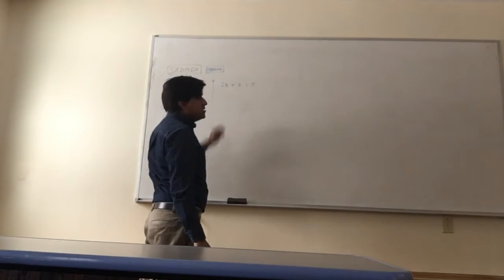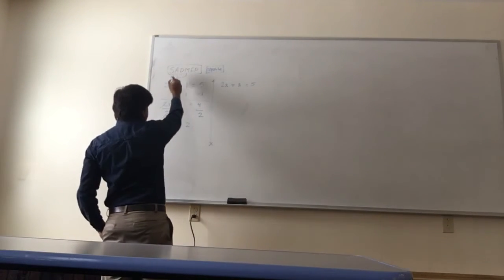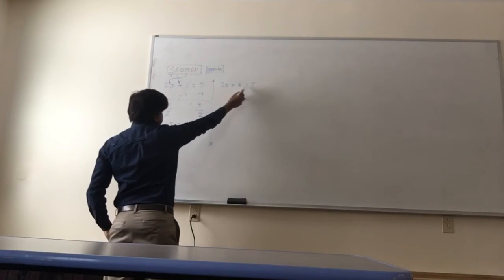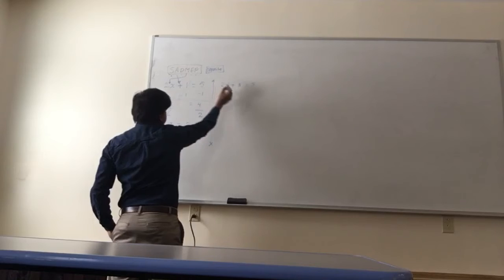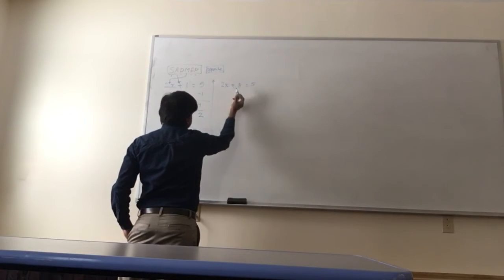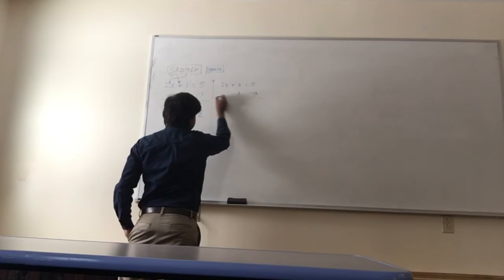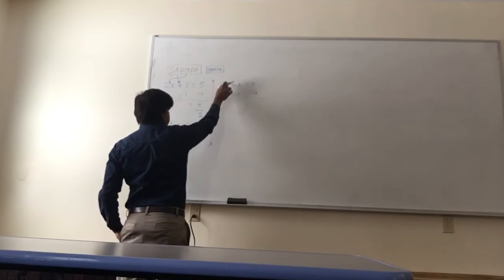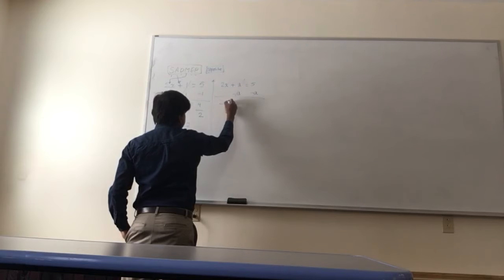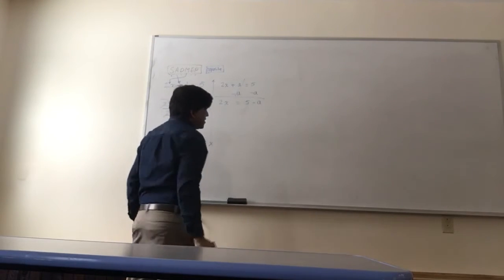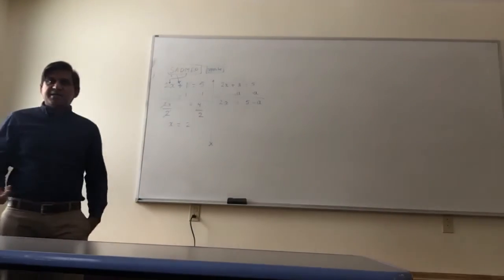Again we go through SADMAP. Do we see a subtraction? We do not see a subtraction. Do we see an addition? Yes we do. What's the opposite of addition? Subtraction. So this cancels. Now what are we left with? 2x is equal to 5 minus a.